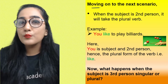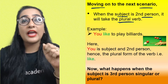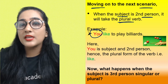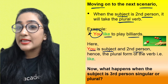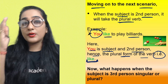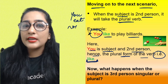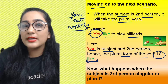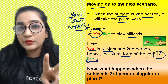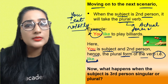When the subject is second person — you — it will take the plural verb. 'You' is the second person and it will always take the first form of the verb. For example: 'You eat noisily' — here 'you' is my second person subject and I am using 'eat,' the actual base form of the verb, because you always takes the plural verb. These things are very important; keep them in mind always because that's how you develop proper understanding of grammar.